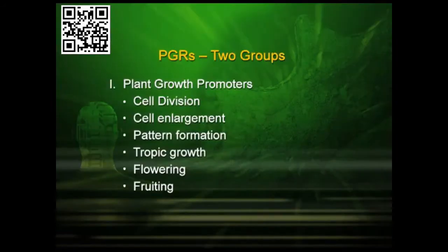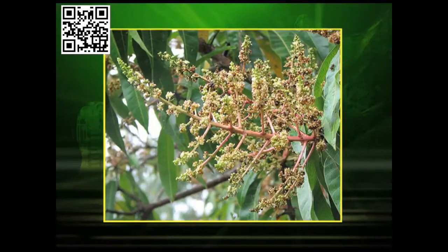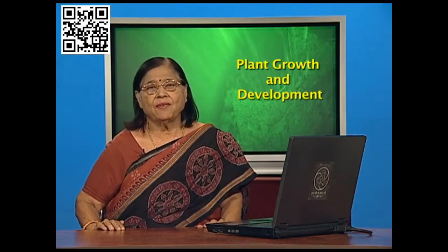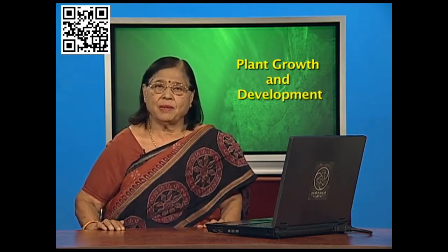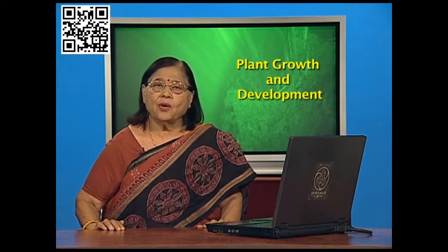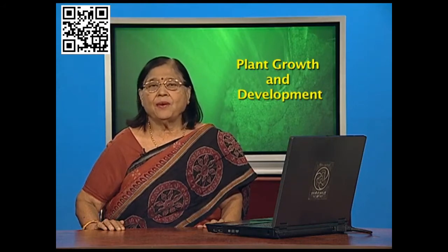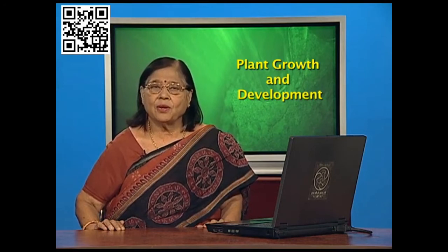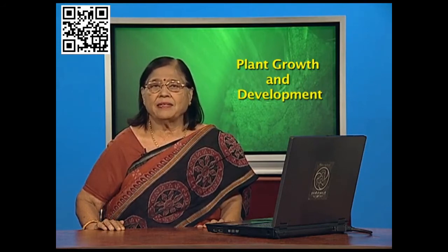Fruiting means fruit formation: from the flower, the fruit will come, or the ovary of the flower will be converted to the fruit. Fruiting is another important phenomenon in the growth of the plant, and it is also controlled by growth-promoting regulators. Then seed formation — once the fruit is formed, the seed should form because only then can another plant come out. All these are promotery effects of plant growth regulators.